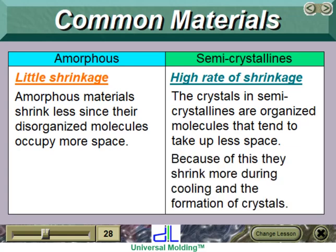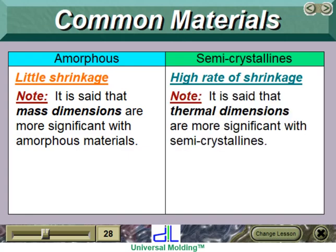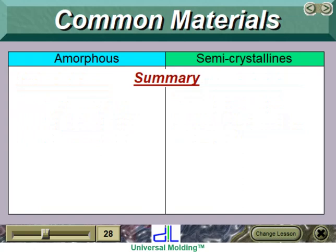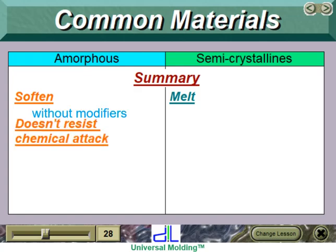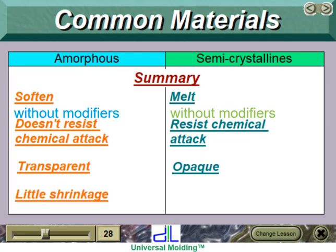Because of this, semicrystallines shrink more during cooling and the formation of crystals. It is said that mass dimensions are more significant with amorphous materials, and that thermal dimensions are more significant with semicrystallines. In summary: amorphous materials soften; semicrystallines melt. Amorphous material doesn't resist chemical attacks; semicrystallines resist chemical attacks. Amorphous materials are transparent; semicrystalline materials are opaque. Amorphous materials have little shrinkage; semicrystallines have a high rate of shrinkage.